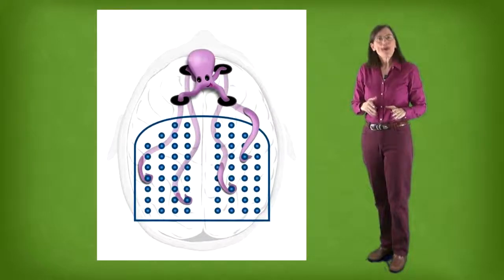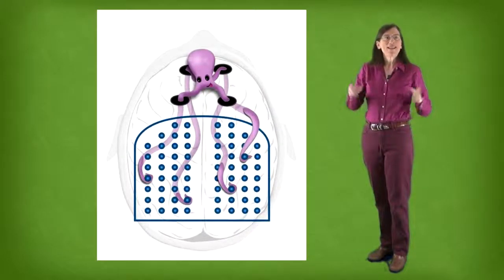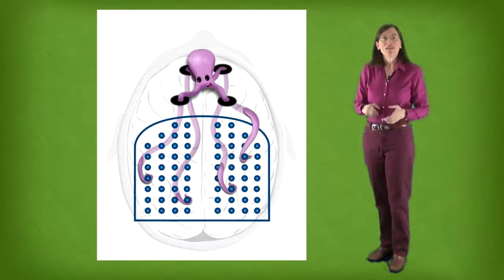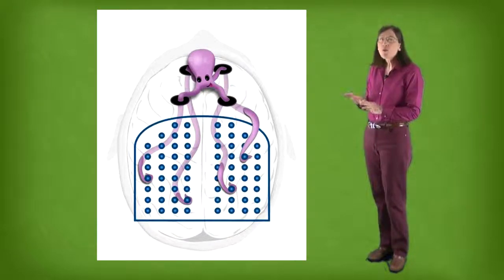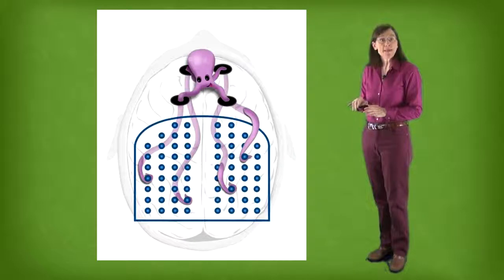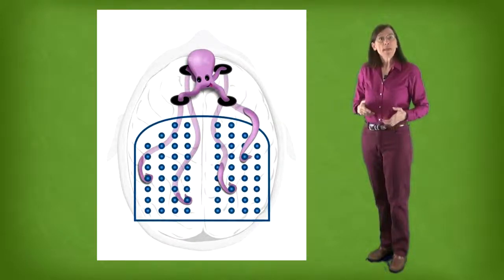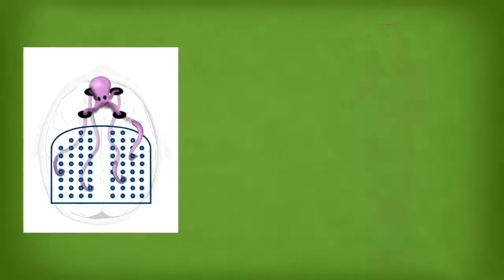When you're focusing your attention on something, it's almost as if you have an octopus, the octopus of attention that slips its tentacles through those four slots of working memory when necessary to help you make connections to information that you might have in various parts of your brain.